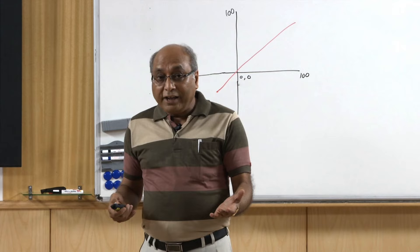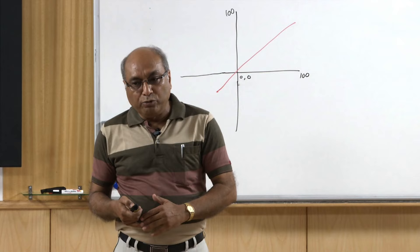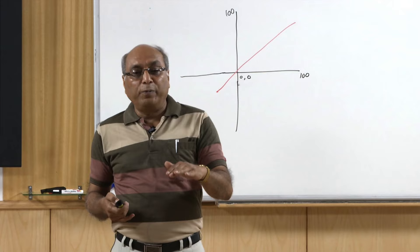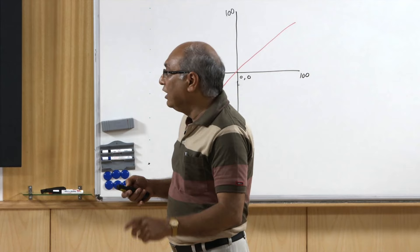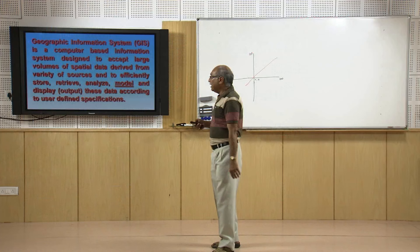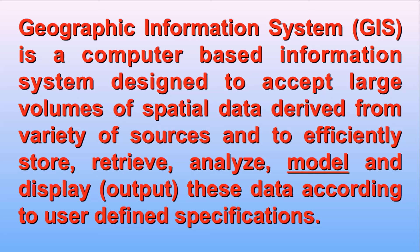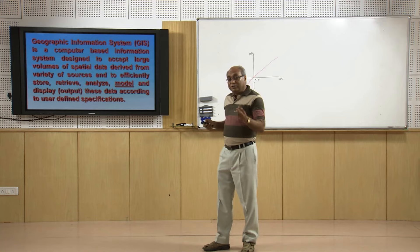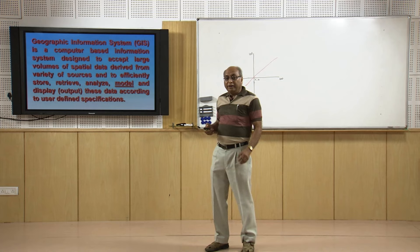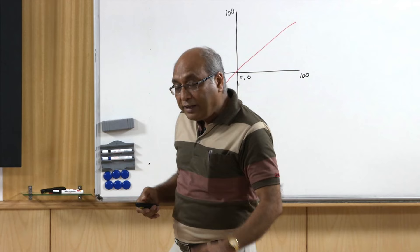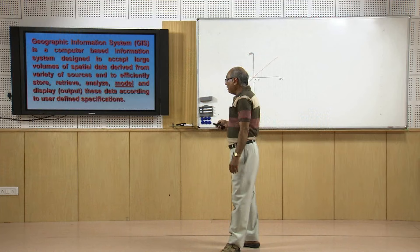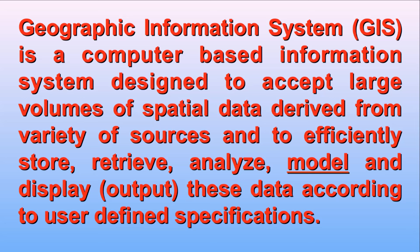Earlier when we did not have good computers, people had maps on transparent sheets or tracing paper, which was very difficult. A manual system of GIS is not truly a GIS in the present-day sense. It has to be computer-based, and it is designed to accept large volumes of spatial data. Spatial or geographic data is location-specific data, and GIS is designed to accept large volumes from which we can analyze easily. Throughout this course, we will learn how that analysis can be performed.